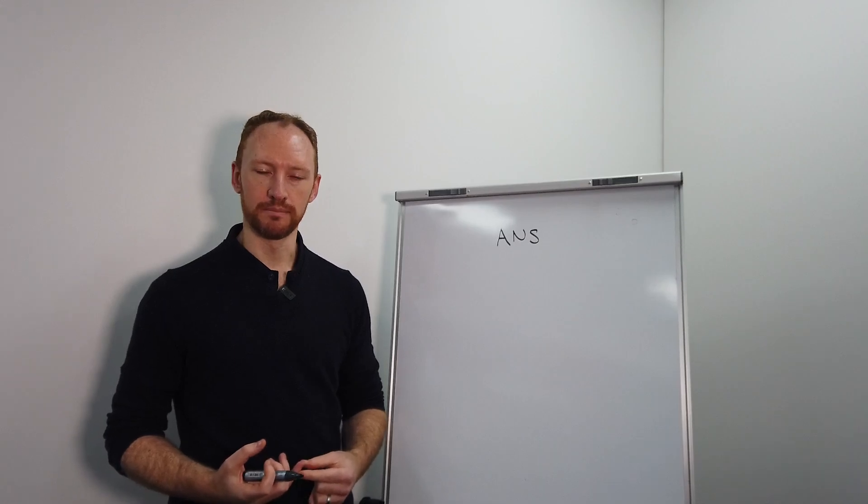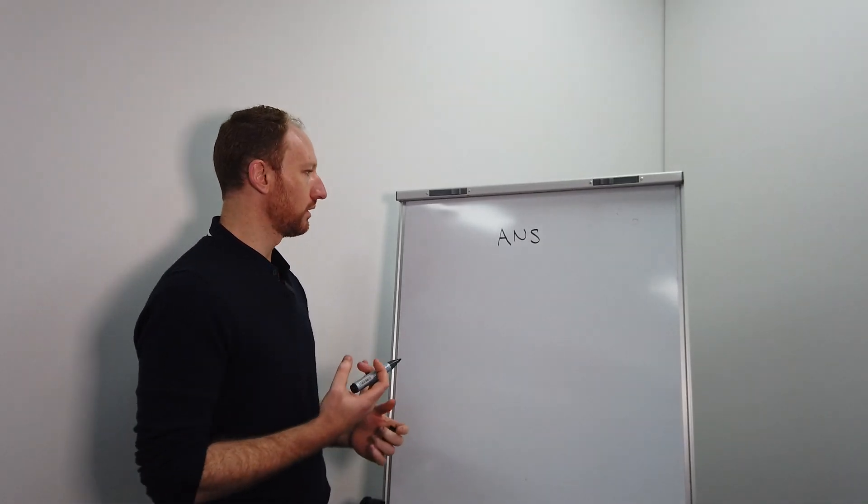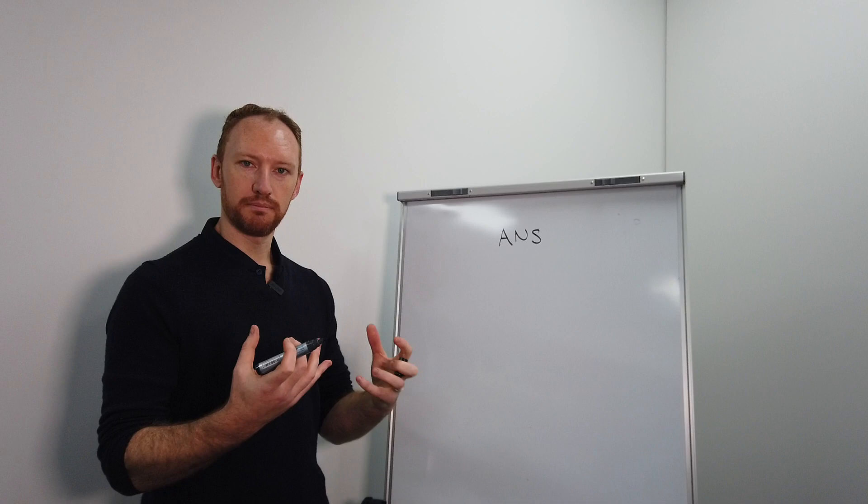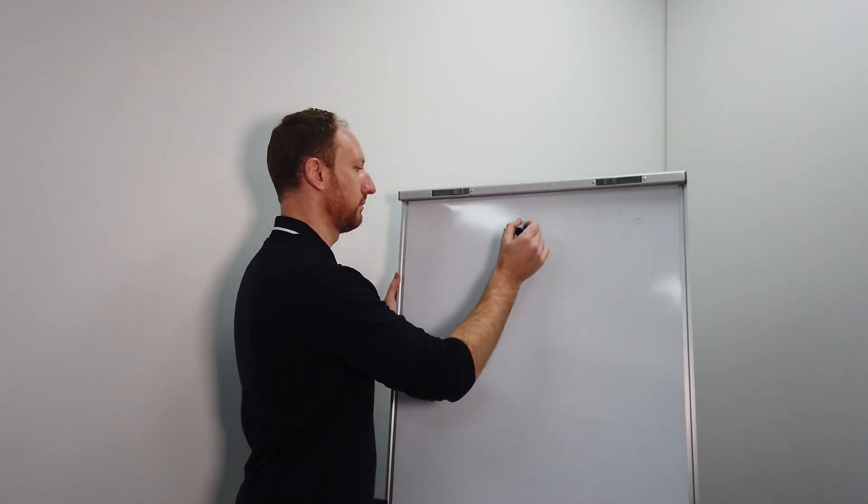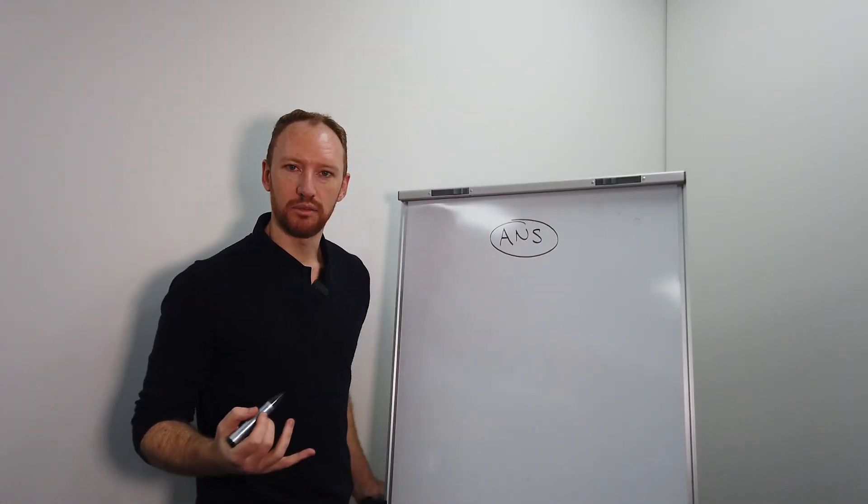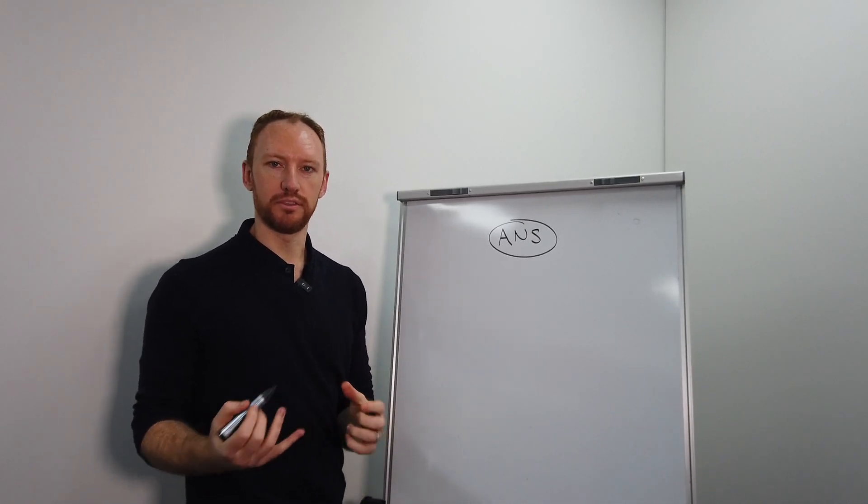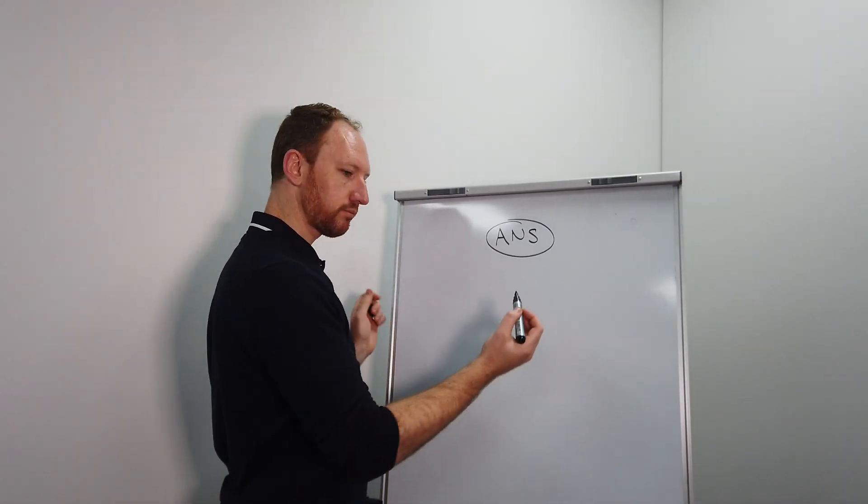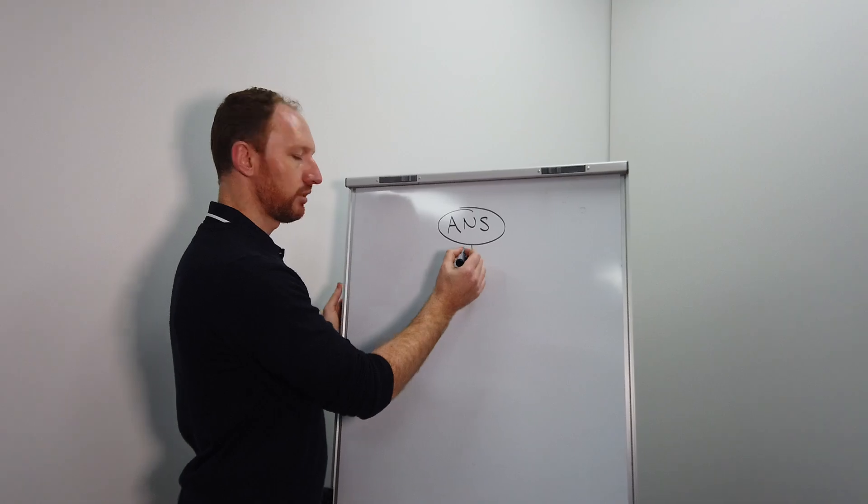That is the overarching name of that part of the nervous system—the ANS for short. And this is broken up into a couple of different branches.